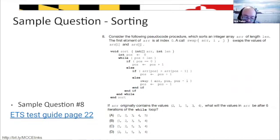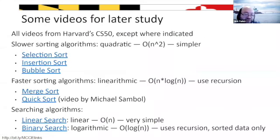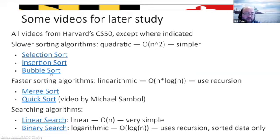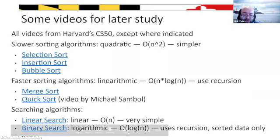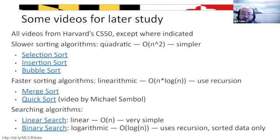We're about ready for a break, but here are some resources because time complexity and search/sort algorithms are among the hardest topics. We've included links to videos even for algorithms not required on the exam. After the break we'll discuss recursion — merge sort and quick sort use recursion, which is how they achieve O(n log n), faster than O(n²). Most of these videos come from Harvard's CS50 course.